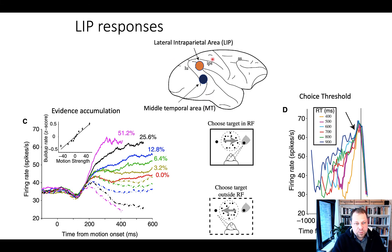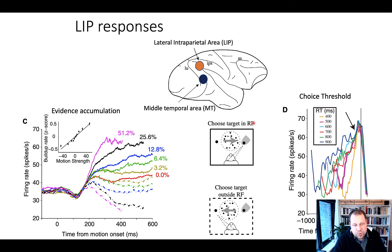When monkeys perform this task, we see in LIP neurons — and also in the middle temporal area — this sort of rise-to-threshold response: an accumulation of evidence in the direction that is represented by the receptive field of the neuron.